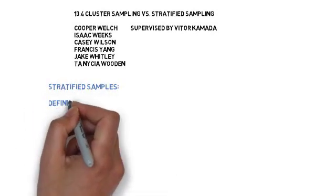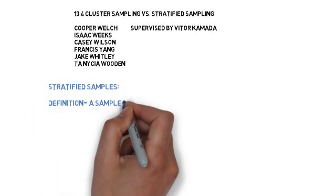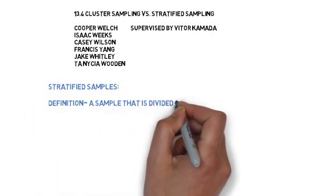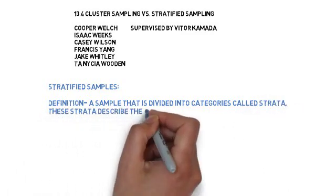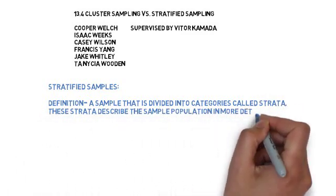Stratified Samples: A sample that is divided into categories called strata. These strata describe the population in more detail.